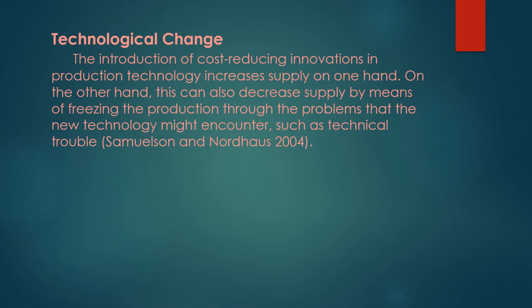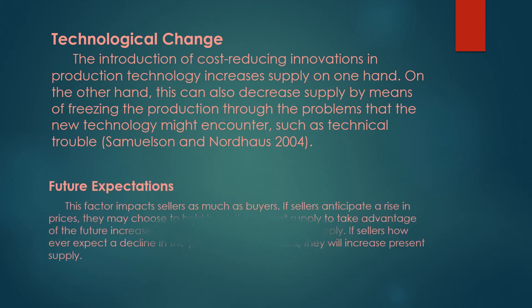Technological change: the introduction of cost-reducing innovation and production technology increases supply. On the other hand, this can also decrease supply by freezing production through problems that new technology might encounter, such as technical troubles or some losses. Future expectation: this factor impacts sellers as much as buyers. If sellers anticipate a rise in prices, they may choose to hold back current supply to take advantage of the future price increase, thus decreasing market supply. If sellers however expect a decline in price for their products, they will increase present supply.